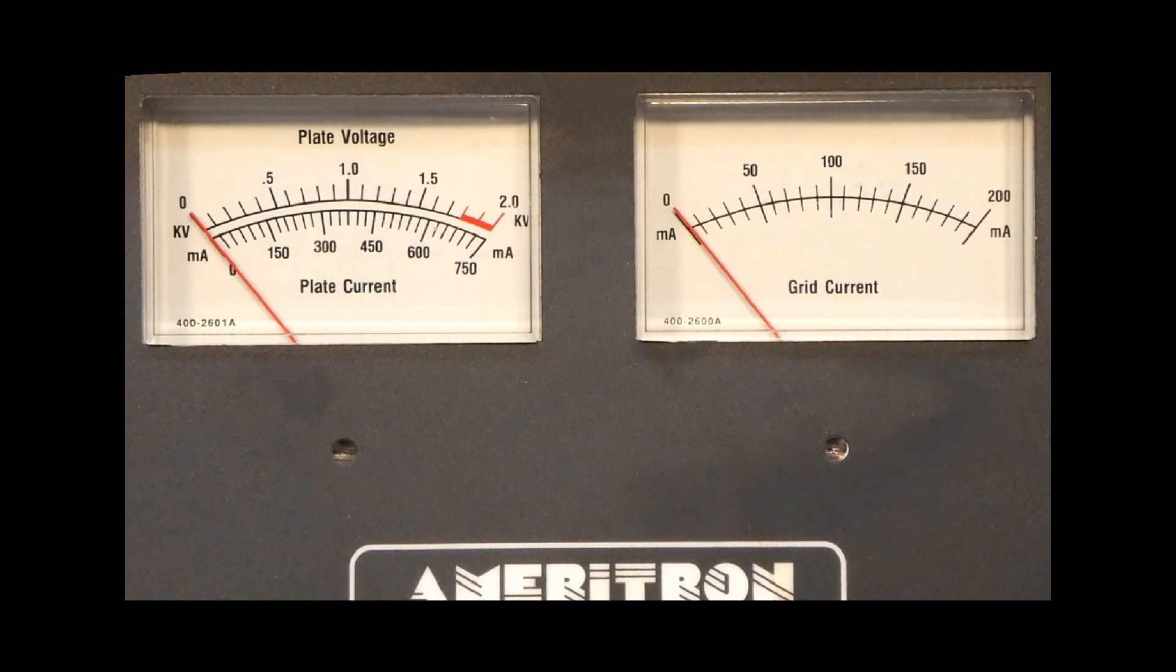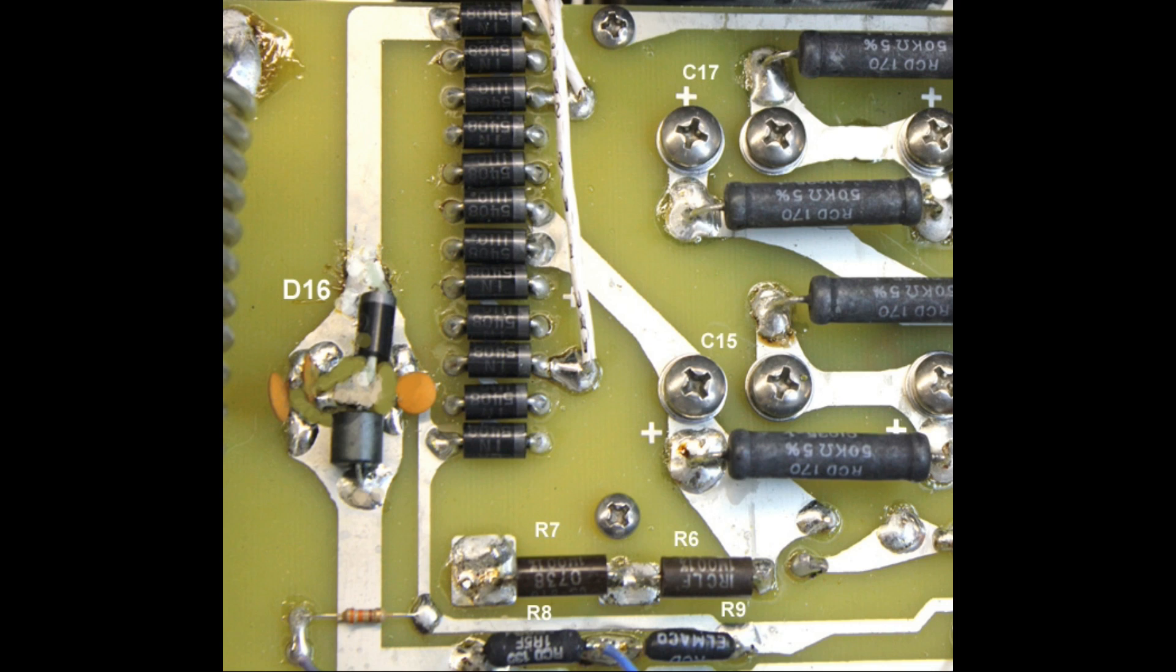This indicates a bad meter protection diode, so you shouldn't go any further with using the amplifier until you repair or replace that diode. Now, in the 811 amplifier series, although this board varies a little bit, the diode is always located between the tank coil.